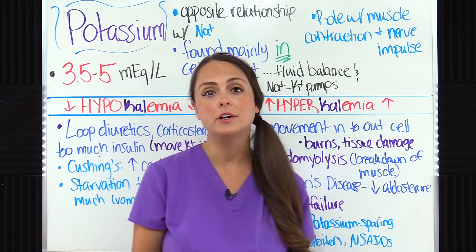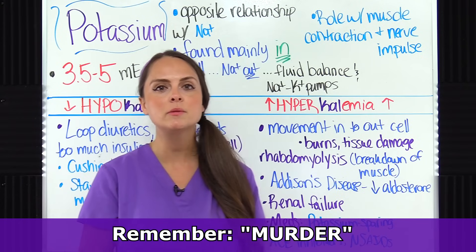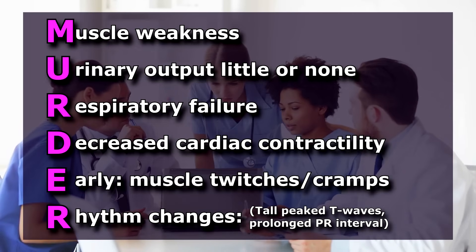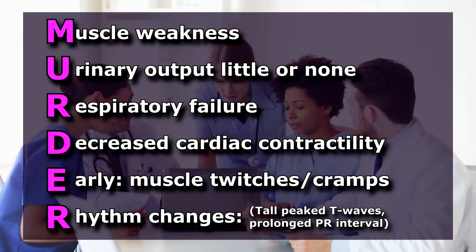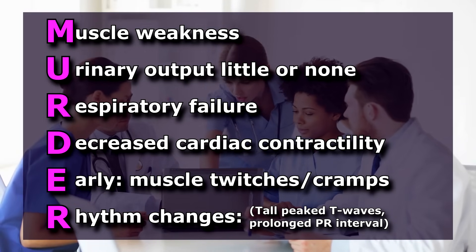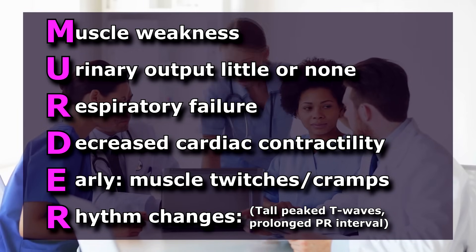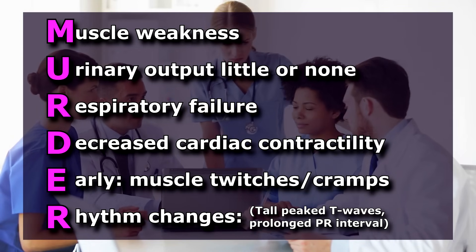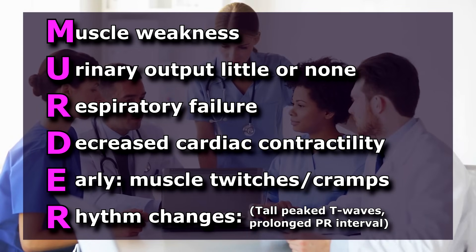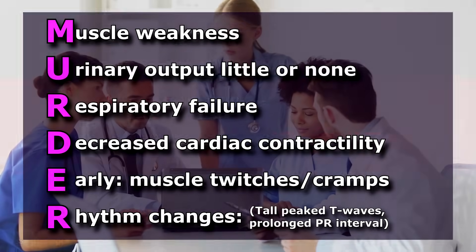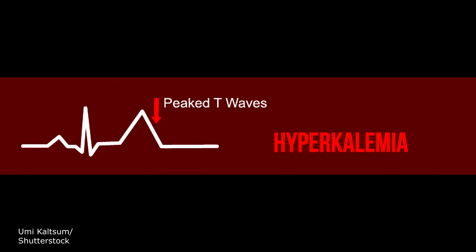For the signs and symptoms of hyperkalemia, remember the word MURDER — because if potassium gets too high, it's going to murder the patient. M is for muscle weakness. U is for urinary output — little or none, very common in renal failure. R is for respiratory failure — when it gets so high, muscles quit working and the patient can't breathe. D is for decreased cardiac contractility, weak pulse, low heart rate. E is for early muscle twitches and cramping. R is for rhythm changes — they'll have tall peaked T waves and sometimes a prolonged PR interval.